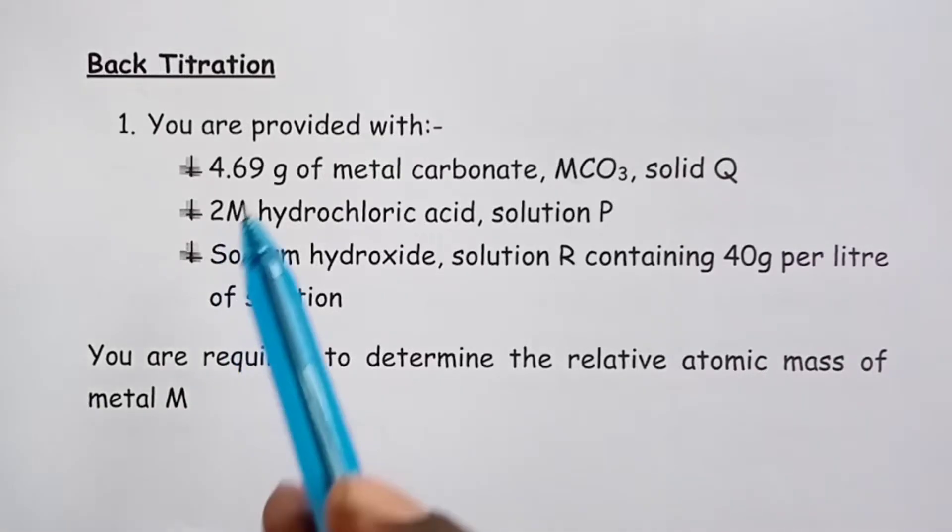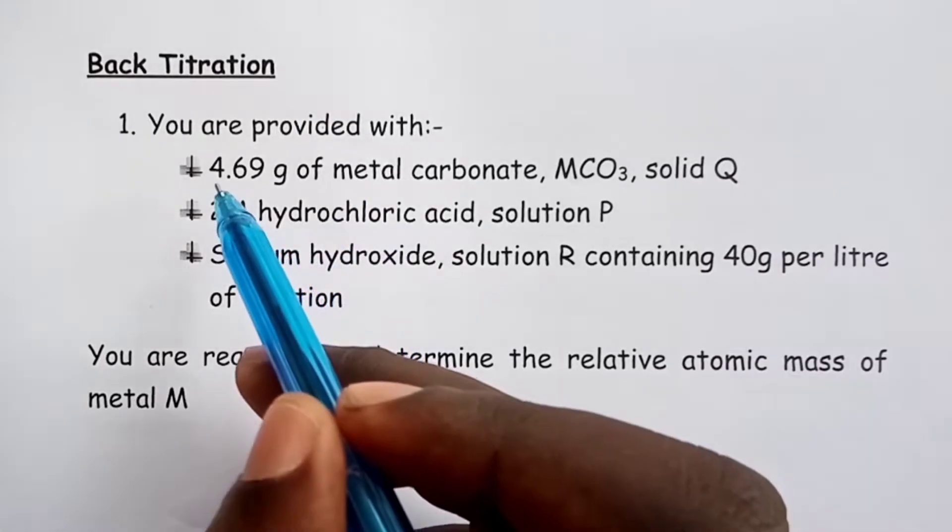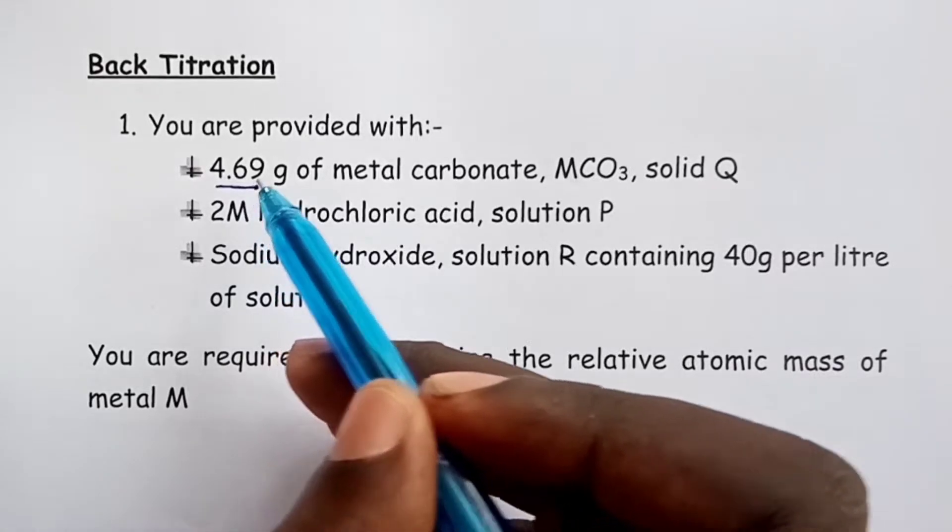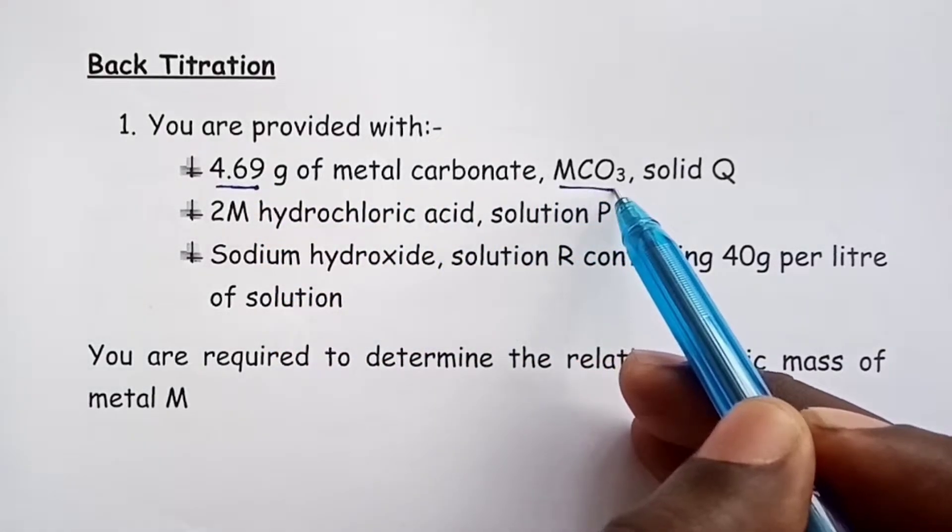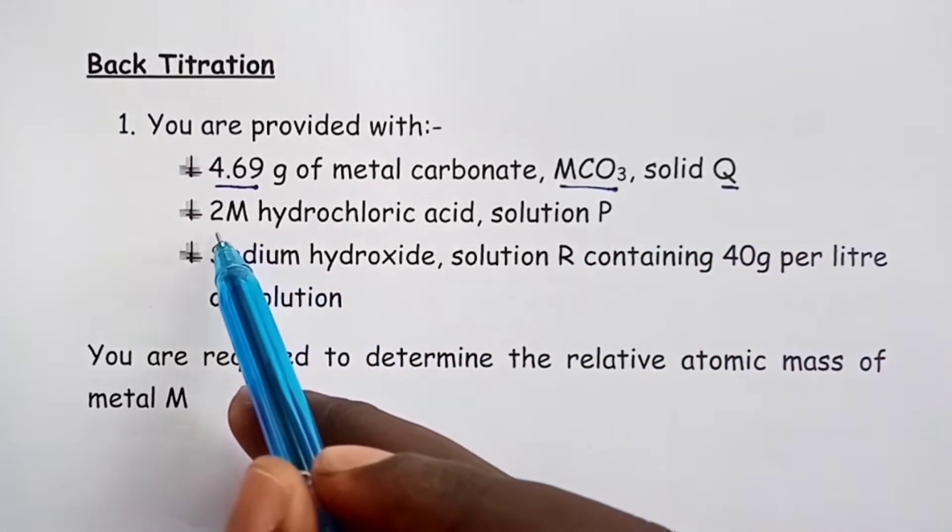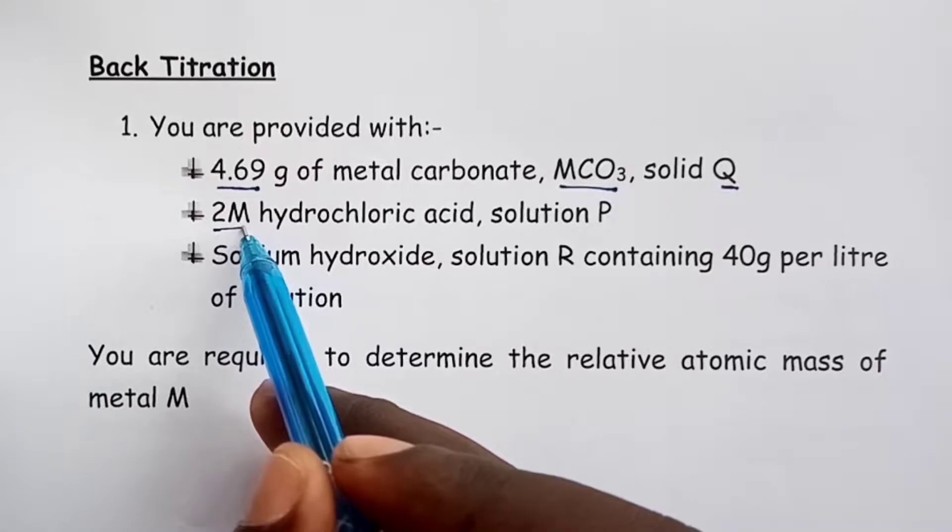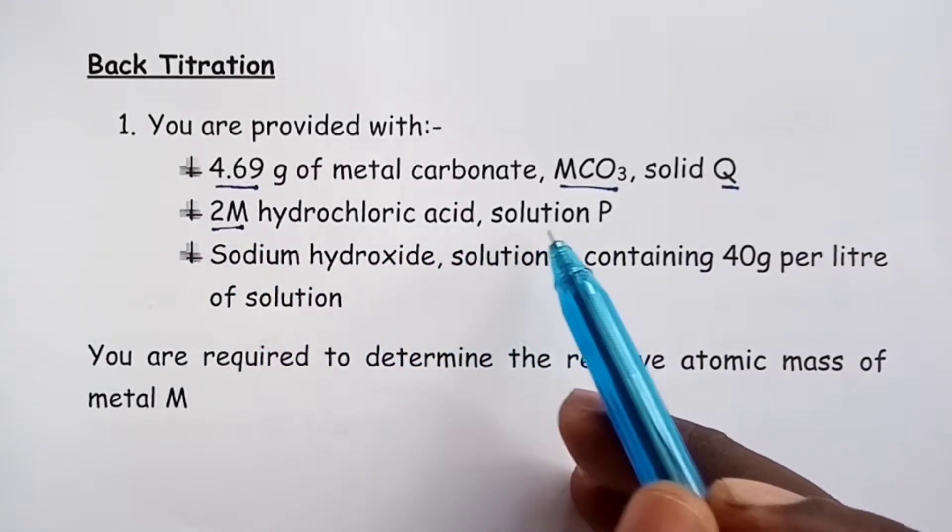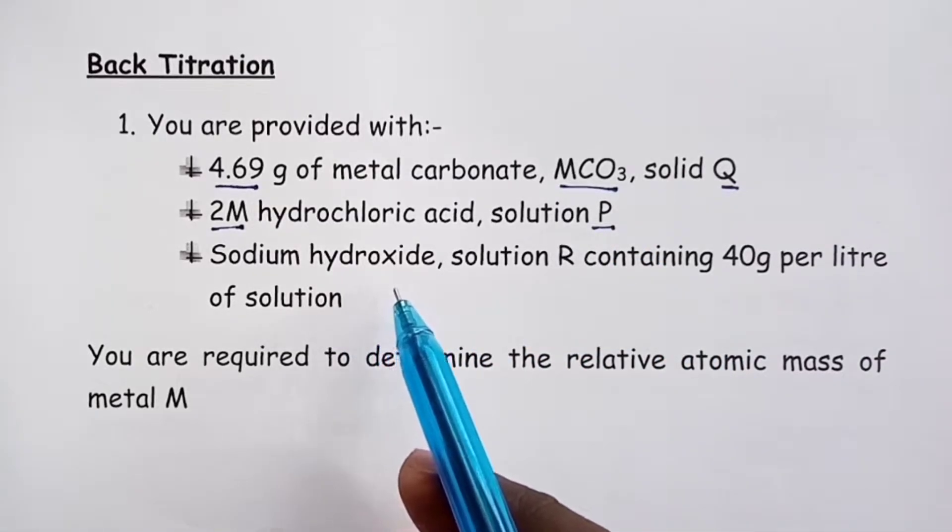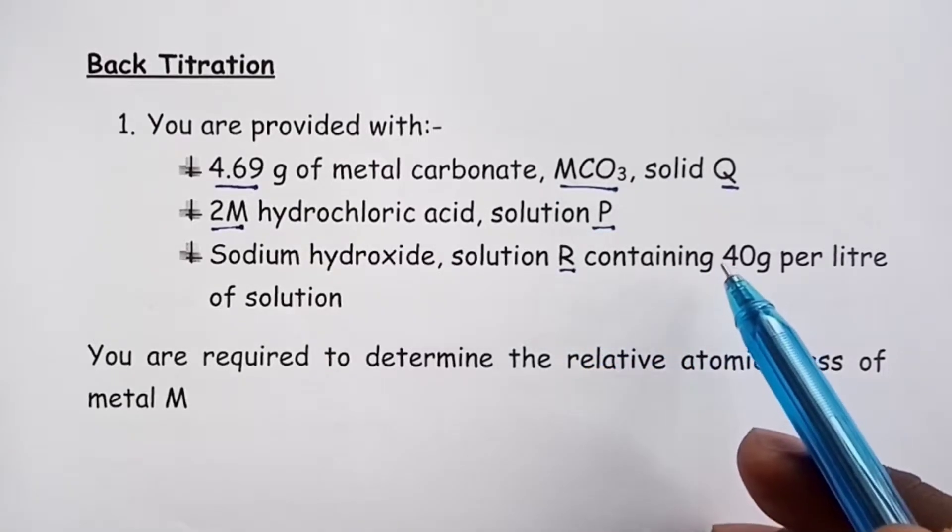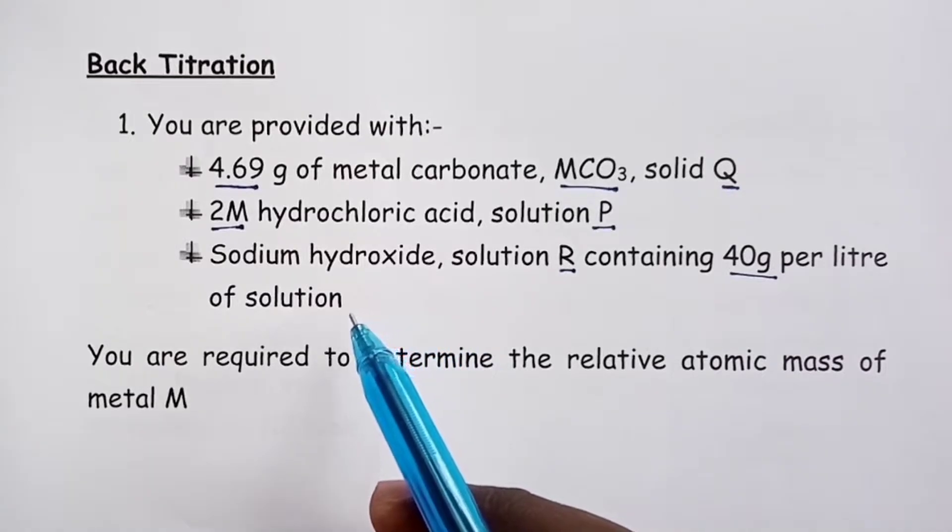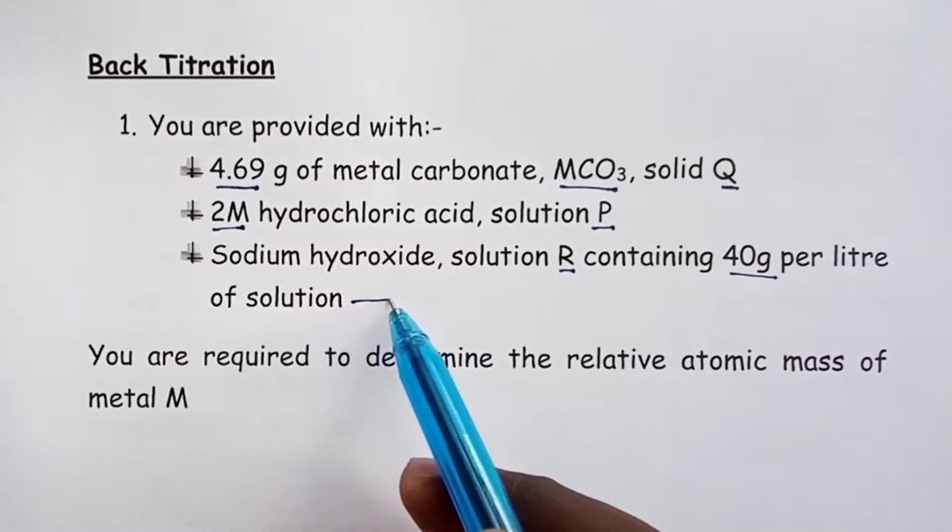In this set 3, we are provided with 4.69 grams of a carbonate, MCO3, as solid Q. We then have 2 molar hydrochloric acid, that is solution P. And then we have sodium hydroxide, solution R, that contains 40 grams per liter of solution.